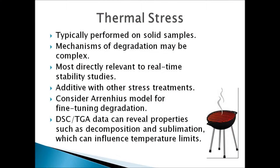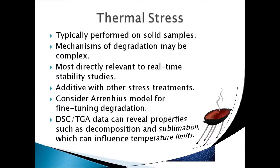Never fail to take advantage of DSC or thermogravimetric analysis data, which can reveal properties such as melting point, decomposition, and sublimation — these can influence your temperature limits. You want to be careful to know if sublimation is happening, because when you degrade a sample you want to account for degradation product peaks. If your material is subliming, it's just going away and you'll have a failure to achieve mass balance.